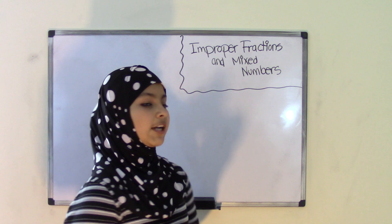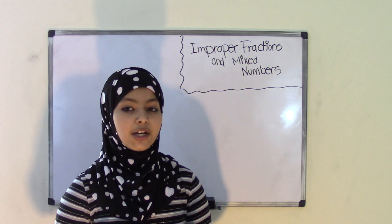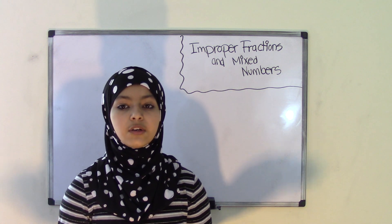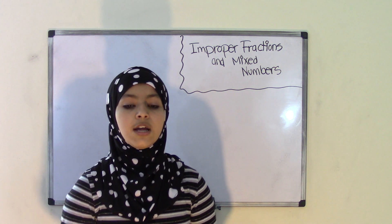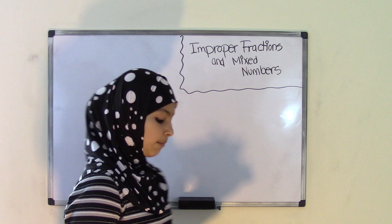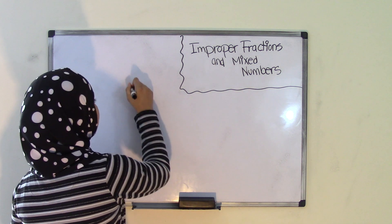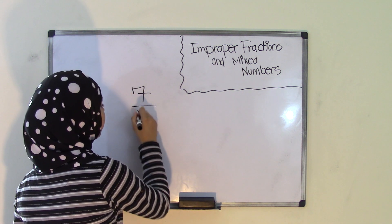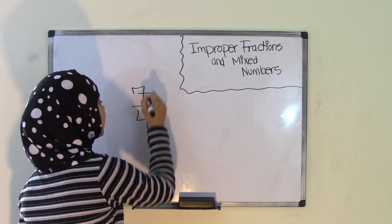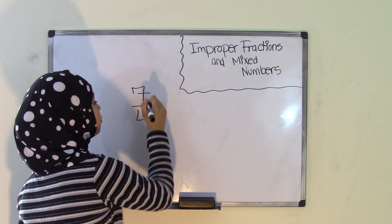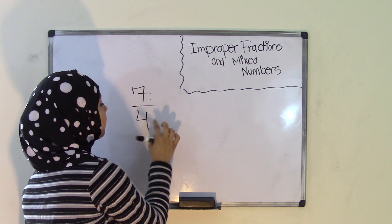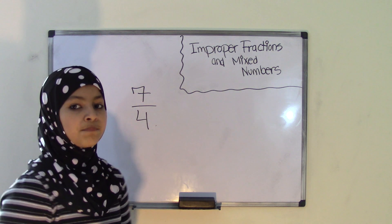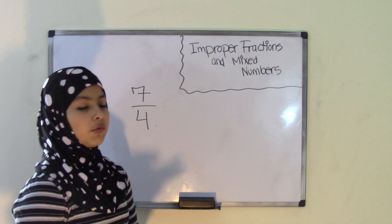Now an improper fraction is just a fraction that has a numerator that is greater than the denominator. So an example of an improper fraction could be 7 over 4, because 7 is the numerator which is greater than the denominator of 4. So that's an improper fraction.